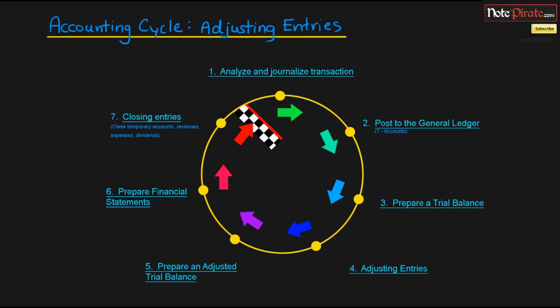If you've been watching from the beginning of this series, you know that we're covering step number four, which will be about adjusting entries. We've just made it past the midpoint of the accounting cycle, working our way towards the finish. The accounting cycle is a really comprehensive circular model with a lot of different interrelated, confusing parts. In this tutorial, we're going to be covering the theory behind adjusting entries.